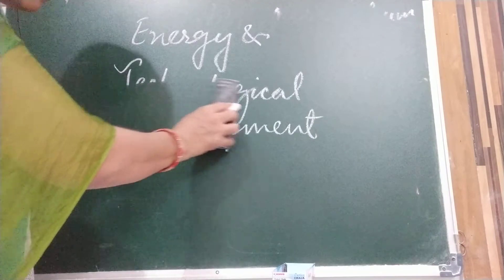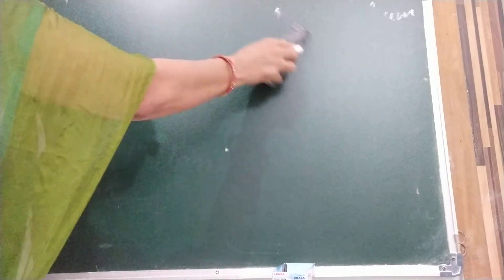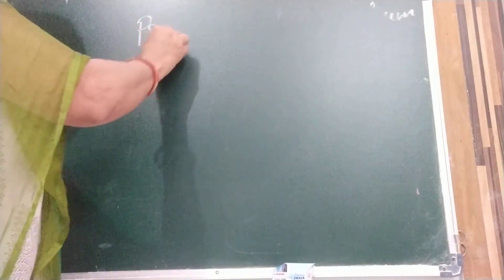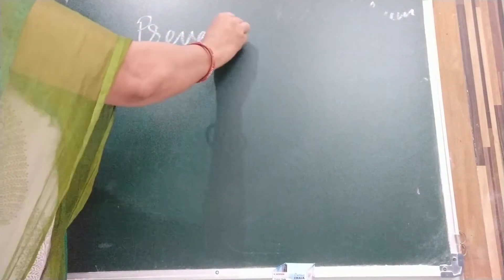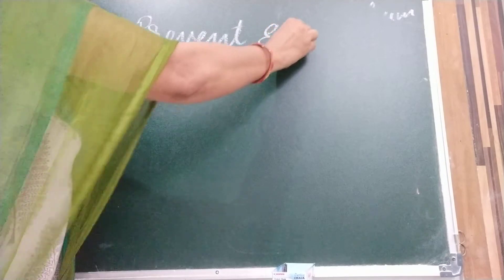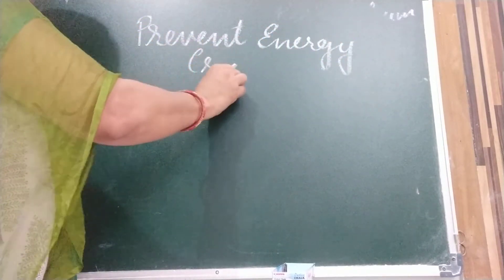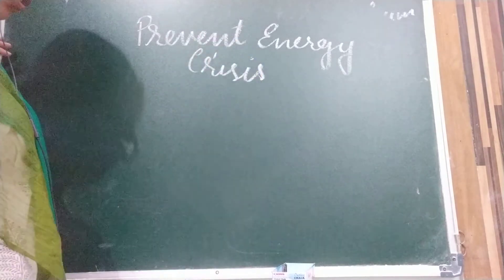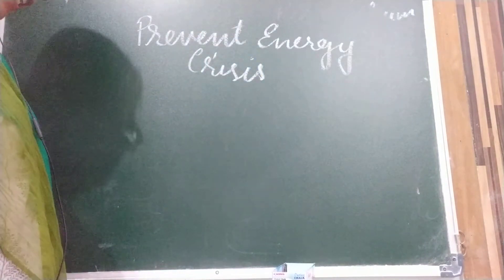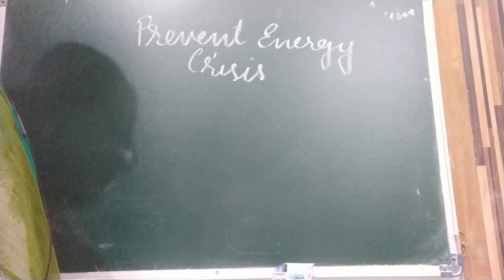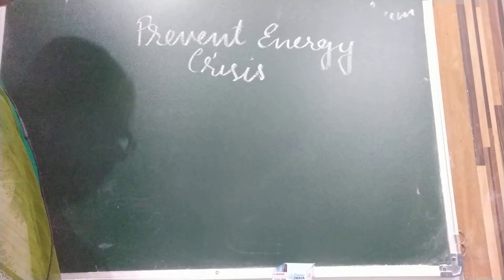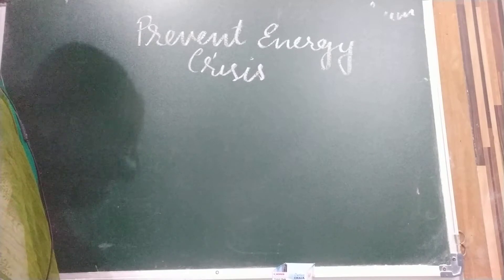So how we can prevent this energy? Ultimately, what energy crisis is there and all you know, like load shedding takes place. How we prevent this energy crisis? By judicious use. By judicious use of, by using energy judiciously, we can overcome energy crisis.